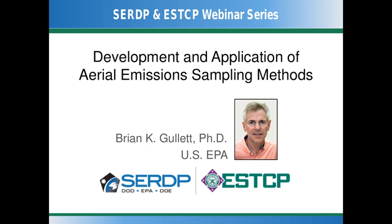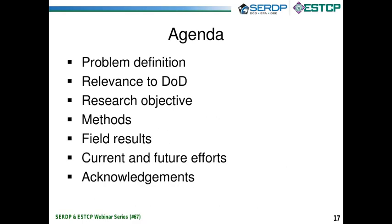This is Brian Gillette. I'm with the Environmental Protection Agency in the Office of Research and Development, located in Research Triangle Park, North Carolina. It's my pleasure today to talk to you about development and application of aerial emissions sampling methods. I'm going to talk about what the problem is that we were trying to solve and why this is relevant to the Department of Defense, our research objectives and how we achieve them with the methods we've developed, field results in applying these methods, and briefly talk about current and future efforts.